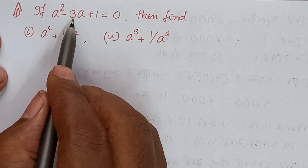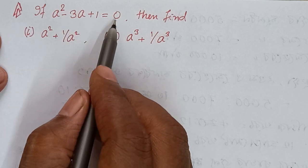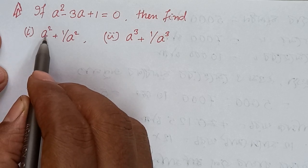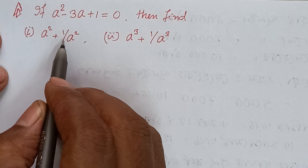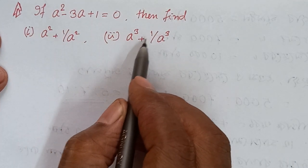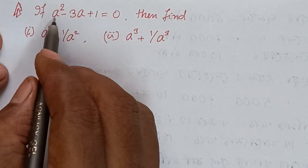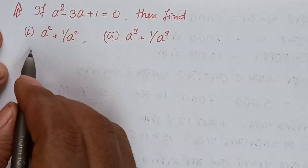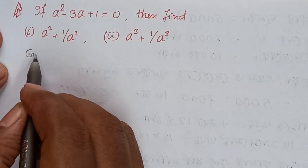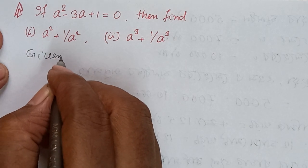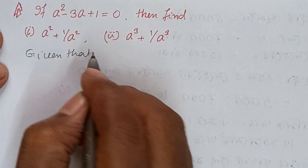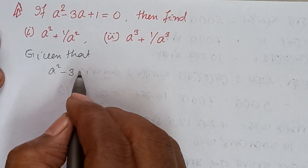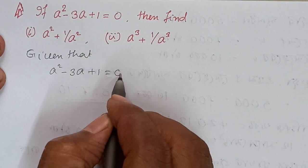If a square minus 3a plus 1 equals to 0, then find the value of: number 1, a square plus 1 by a square; and number 2, a cube plus 1 by a cube. Given that a square minus 3a plus 1 equals to 0.